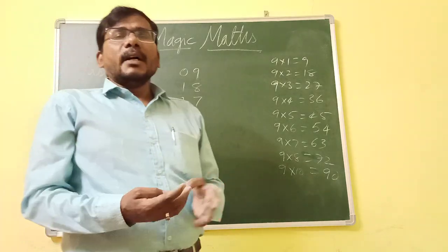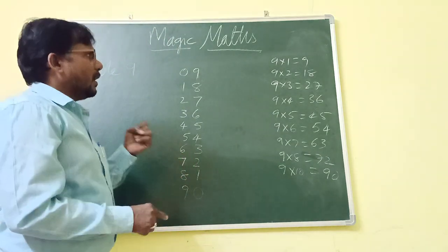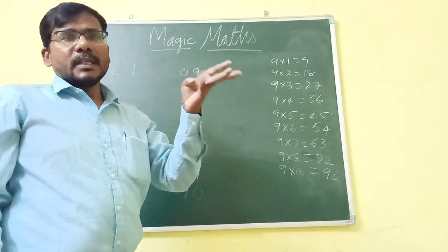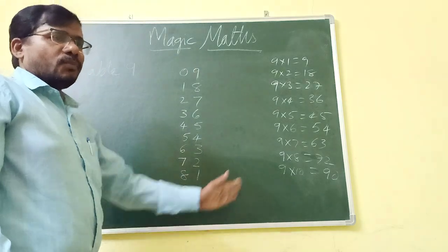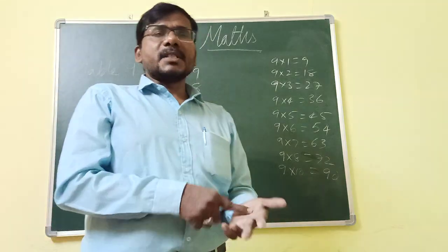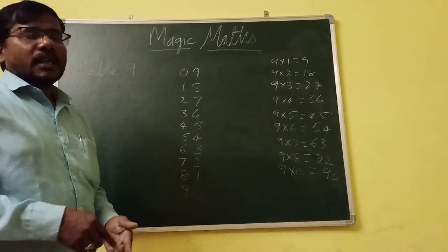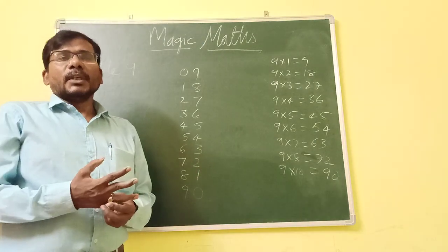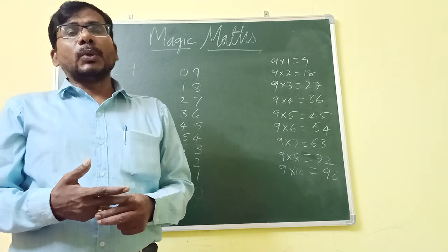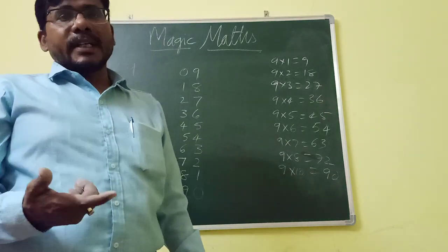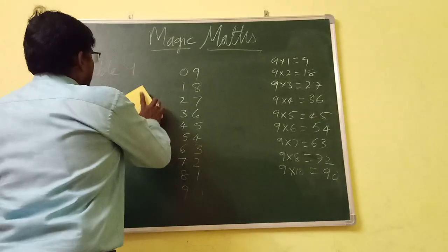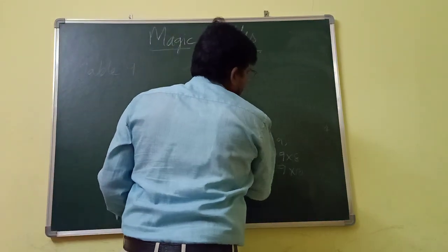With this, we have learned in previous class table 2, we need to follow 2, 4, 6, 8 and 0. Then we need to follow some magic numbers, then table 3, table 4, table 5, table 6, table 7, table 8 and table 9. With this, up to table 9 session is complete. You can ask me any doubts.